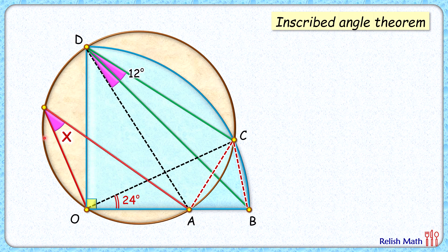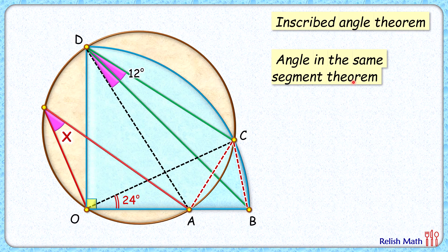And now, this time, concentrate on this brown circle. So in this brown circle, we'll apply angle in the same segment theorem. That is, the angle inscribed by the chord CA at the circumference—if you see, CA is inscribing the angle of 24 degrees at the circumference—it will inscribe the same angle at the remaining part of the segment.